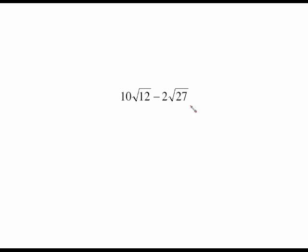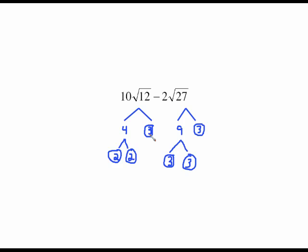10 radical 12 minus 2 radical 27. First thing I have to do is get these individual radicals simplified by doing a tree. There's the trees. 12 I broke as 4 times 3. 3 is prime so it stayed. 4 broke into 2 times 2. 27 I broke as 9 times 3. That 3 is prime. Had to break the 9 into 3 times 3.